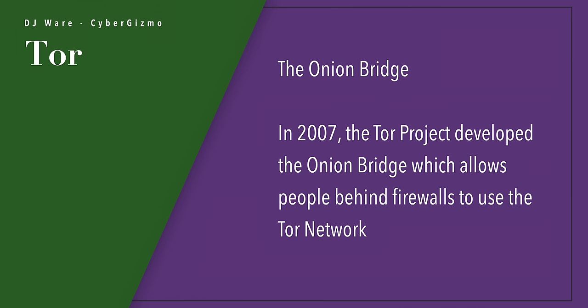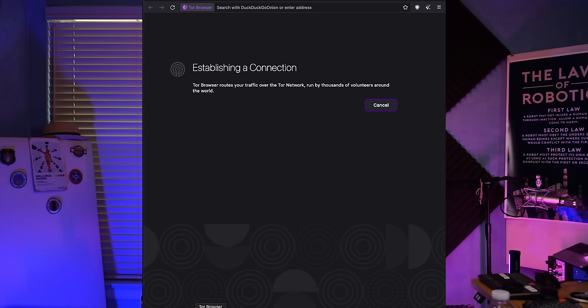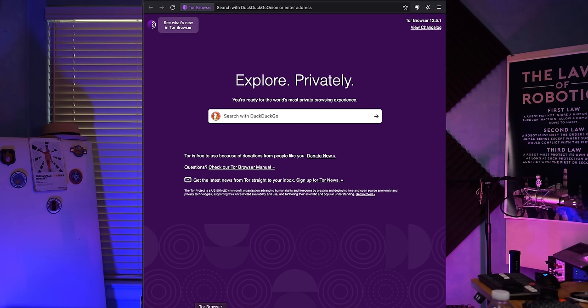The problem with Tor at this point was they were running into issues where if a particular governmental entity or company threw up a firewall and put it through a proxy, that blocked access to the Tor network. So they created this thing called the Onion Bridge, which allowed people to get to the Tor network from behind corporate or government firewalls. Due to Edward Snowden's efforts in 2013, when he exposed the extent and depth of data collection by the three-letter agencies, Tor usage again spiked. The Tor project continues to try to make Tor easier to use and set up.